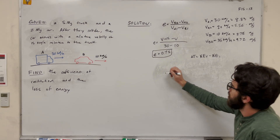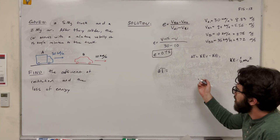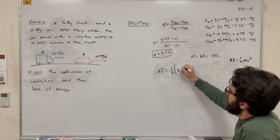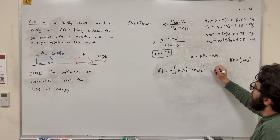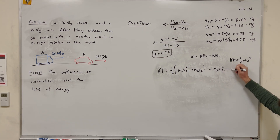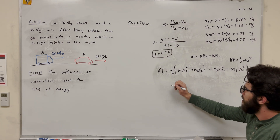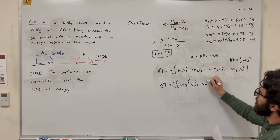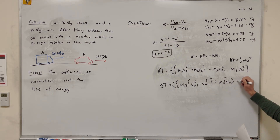So we're solving for delta T. Kinetic energy equals one-half mass times velocity squared. We can factor out one-half since all terms have it. Starting with the final minus initial form: delta T equals one-half times mass of A times (velocity A final squared minus velocity A initial squared), plus mass of B times (velocity B final squared minus velocity B initial squared).